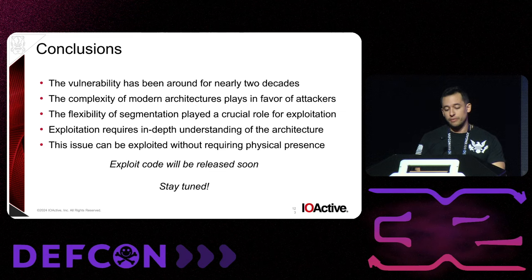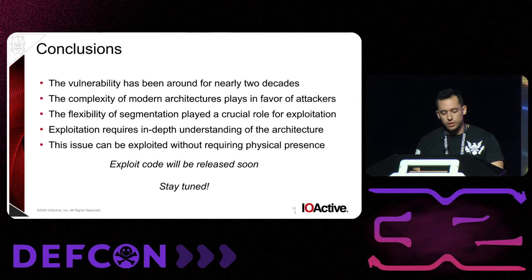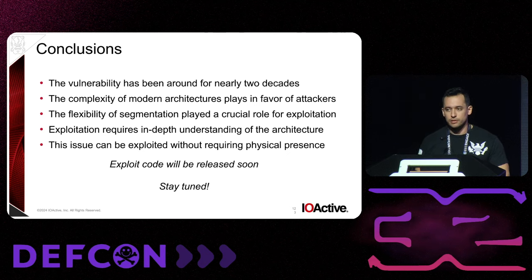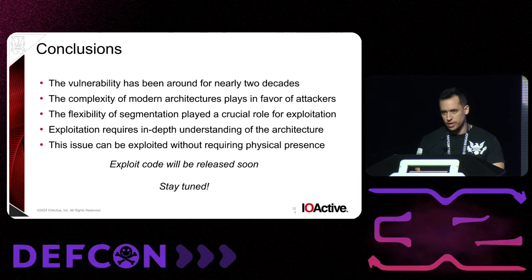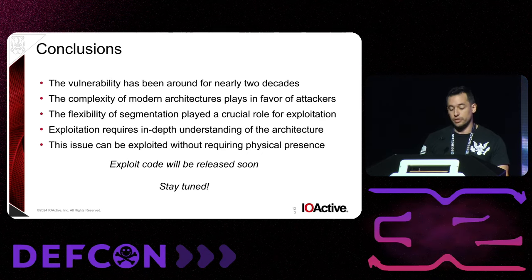Conclusions and takeaways: the vulnerability has been around for nearly two decades. The complexity of the architecture clearly plays in favor of attackers — we see this with the flexibility of the GDT, the two types of wraparounds, the bi-level address granularity, and how the MSRs can be accessed without any restriction from ring zero. These things combined are what made this exploit approach possible, and there may be other exploit methods too. All of this requires an in-depth understanding of the architecture, and in the end we managed to exploit this without requiring physical presence. Exploit code will be released soon — stay tuned.